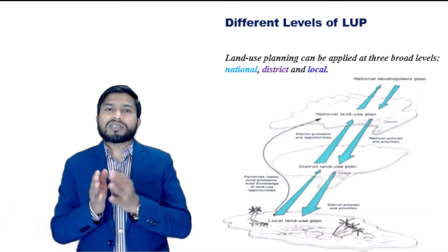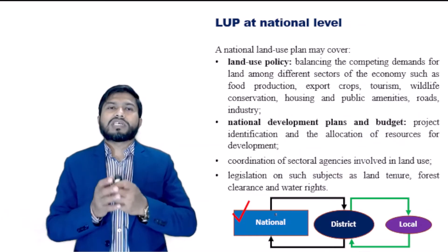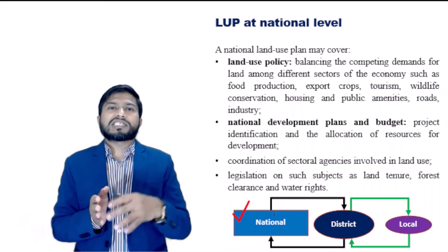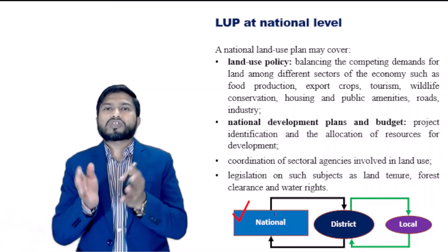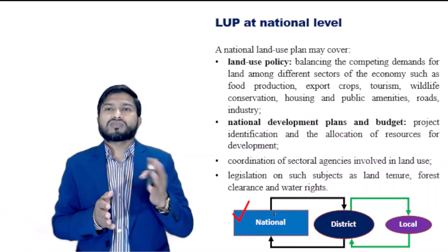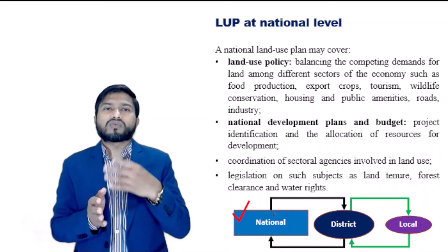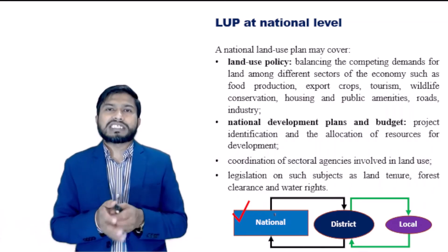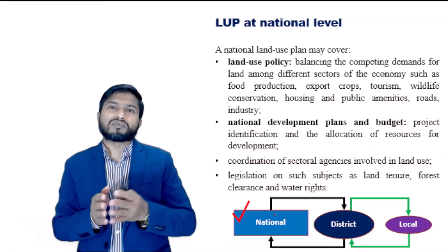The flow of information should be in both directions. At the national level, planning is concerned with national goals and the allocation of resources. In many cases, national land use planning does not involve the actual allocation of land for different areas, but the establishment of priorities for district level projects.